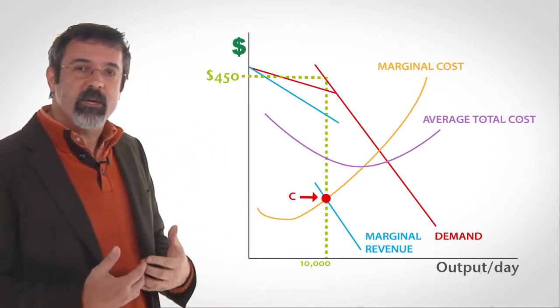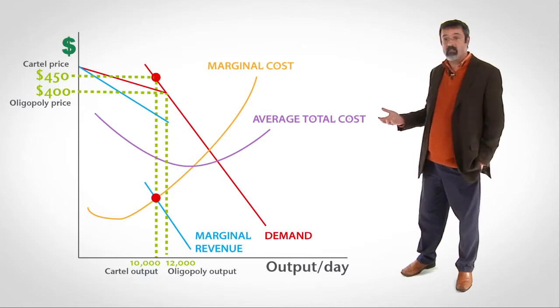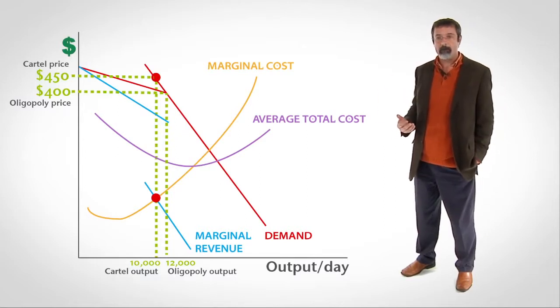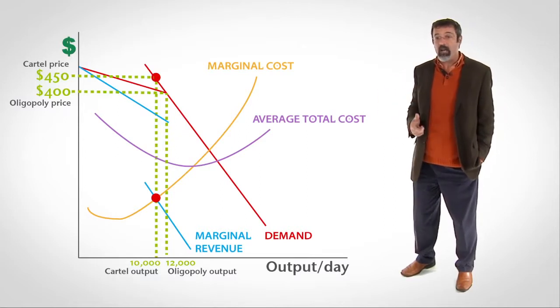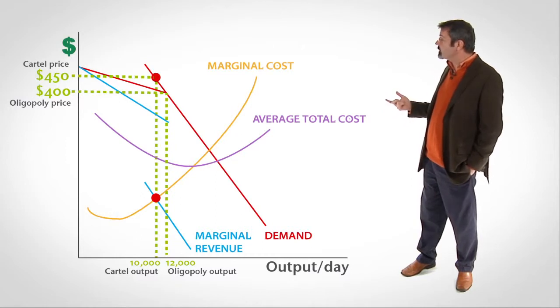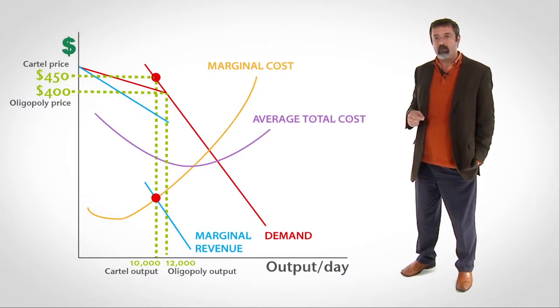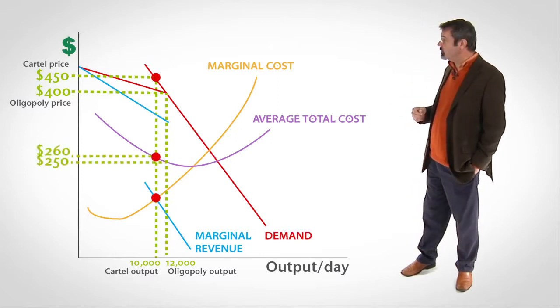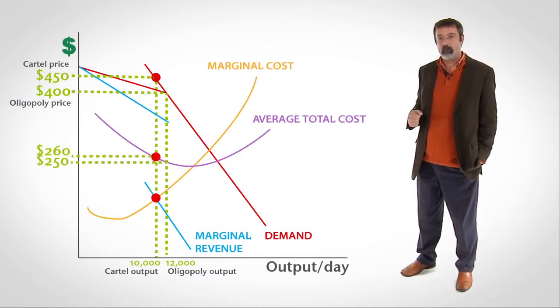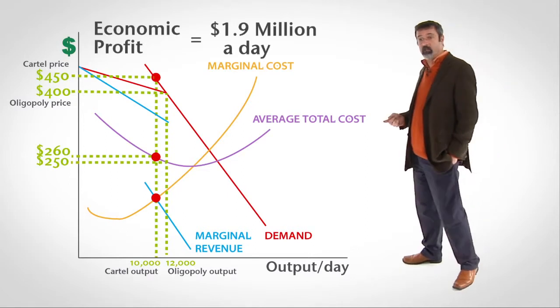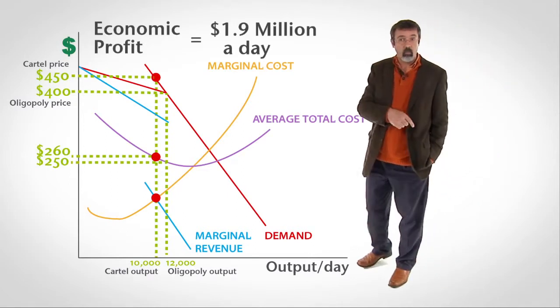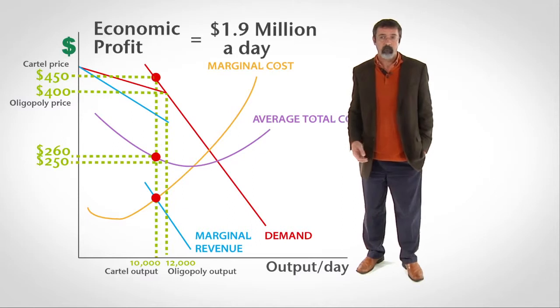From this analysis, we see that as a cartel, the firms are producing fewer units, ten thousand seats a day instead of twelve thousand seats a day. They're charging a higher price, four fifty a seat instead of four hundred a seat. And their average total cost has risen from two fifty a seat to two sixty a seat. The firm's profits have also risen from one point eight million per day to one point nine million per day.